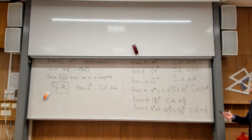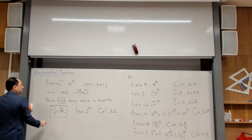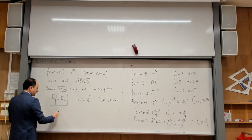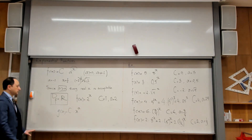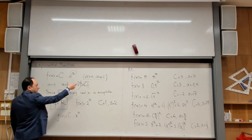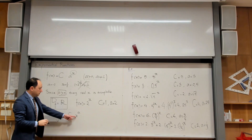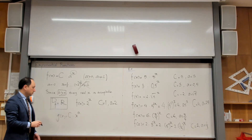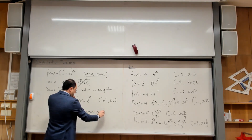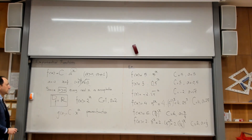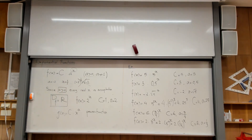It is important to realize there is a big difference between an exponential function f of x equals c times a to the power x, and a power function g of x equals C times x to the power a. In an exponential function, a is the constant and x appears in the exponent. In a power function, x appears in the base and the constant appears in the exponent. Make sure you understand the difference.